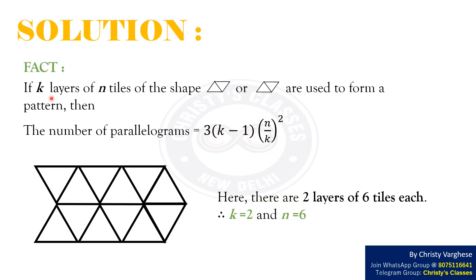Solution: If k layers of n tiles of the given shapes are used to form a pattern, then the number of parallelograms equals 3 into k minus 1 into n by k squared. Here, there are two layers of six tiles each.